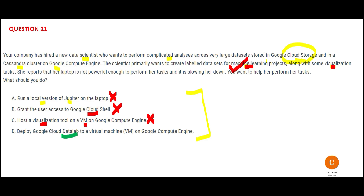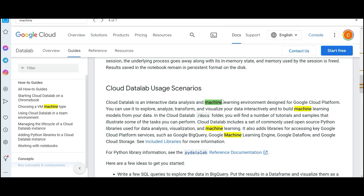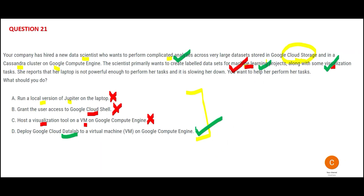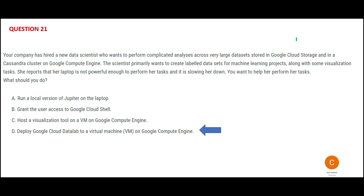We are left with only one option: Cloud Datalab. With Cloud Datalab you can do machine learning, data analysis, and visualization — everything. It is a one-stop shop, very powerful. In the IT world, if you get access to Cloud Datalab you can do wonders. Just like Ranbir Kapoor in Brahmastra did complicated analysis to understand his true powers — Cloud Datalab is the final answer.